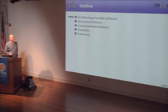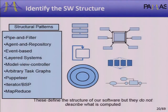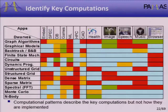Now we get down to brass tacks: how do we actually do this? The first step is to identify the software structure. There are nine particular structural patterns — basic ways of putting software together — which I think of as the layout of your factory plant. Then there are the key computations: 13 key types of computation.